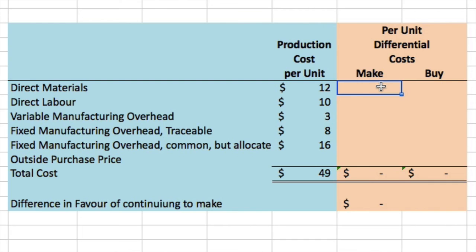Exercise 12.3 is a make-or-buy component problem. Current Control manufactures a variety of electrical switches. The company is currently manufacturing all its own component parts, and an outside supplier has offered to sell a switch to Current Control for $32 per unit. To evaluate this offer, Current Control has gathered cost information relating to producing the switch internally, which I've replicated on the screen.